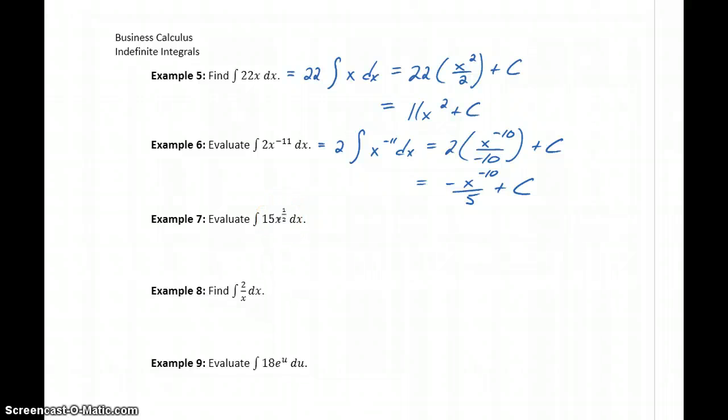To evaluate the integral of 15x to the 1 half, we again use that same idea. 15 is just a constant multiple, so all we need to look at integrating is x to the 1 half. So that will become x to the 3 halves if we increase that by 1 and divide by the exact same value. 15x to the 3 halves, plus that constant c. Then we just look at 15 divided by 3 halves, we'll end up becoming 10x to the 3 halves, plus some constant c.